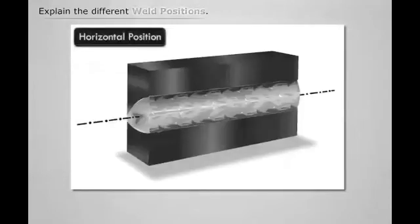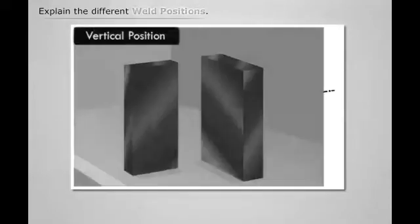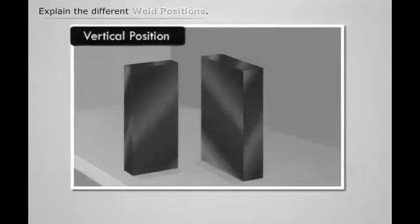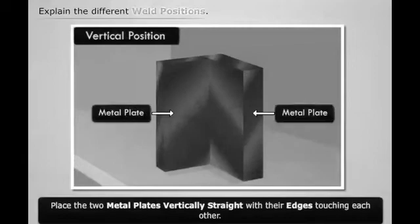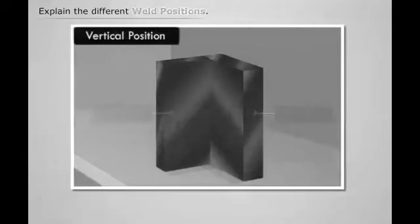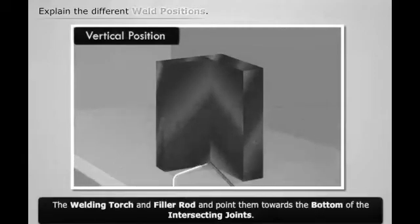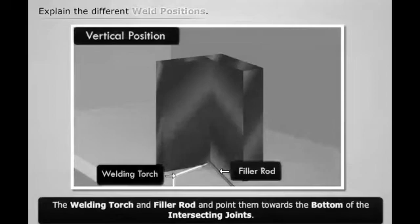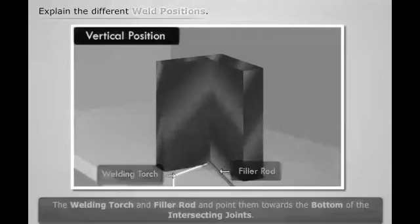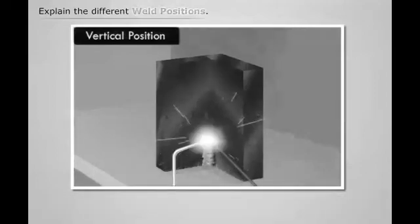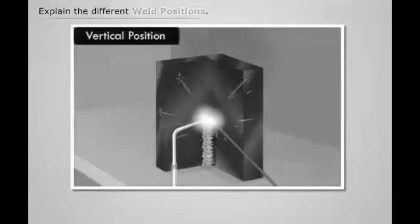Thus we have a weld bead whose alignment is horizontal. Now let us discuss how to produce a weld whose alignment is vertical. First, place the two metal plates vertically straight with their edges touching each other. Then bring the welding torch and filler rod and point them towards the bottom of the intersecting points. Now start the welding process by moving upwards.